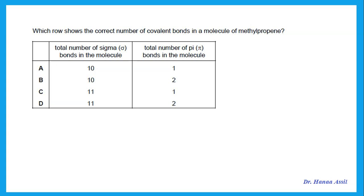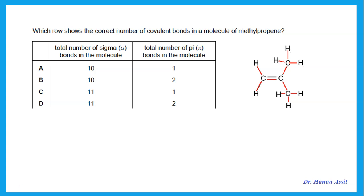Let's look at some questions. This question asks which row shows the correct number of covalent bonds in a molecule of methylpropene — that is propene with a methyl group on the second carbon. How many total sigma bonds do we have? Any single bond is a sigma bond. Remember that any CH₃ is three sigma bonds with three hydrogens. Count the single bonds and one of the double bond — all of these are sigma bonds. The total number of sigma bonds is 11, and there is only one pi bond, because the double bond is one sigma and one pi.